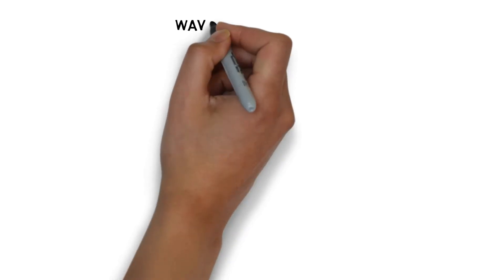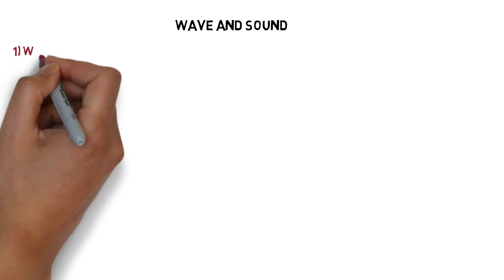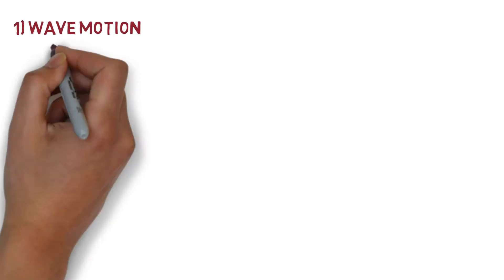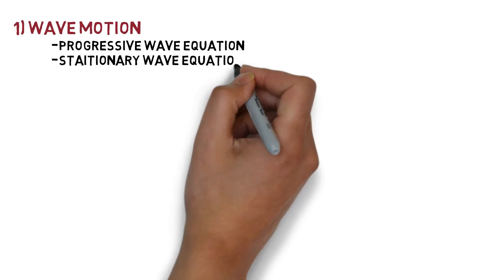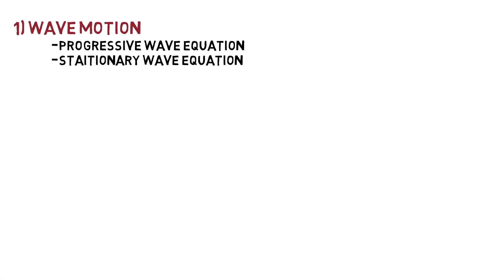Wave and sound is divided into four chapters. Chapter number 1 is wave motion. From wave motion, two important questions are progressive wave equation and stationary wave equation.